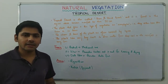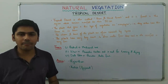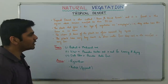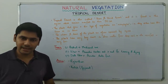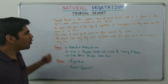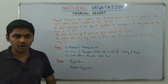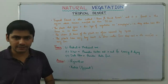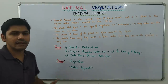The stems and leaves of plants in tropical deserts are often covered by spines — like a cactus — to reduce transpiration and minimize water loss. The plants also have very long roots to draw water from deep in the soil, since rainfall is very scarce. These adaptations help them survive in such arid conditions.